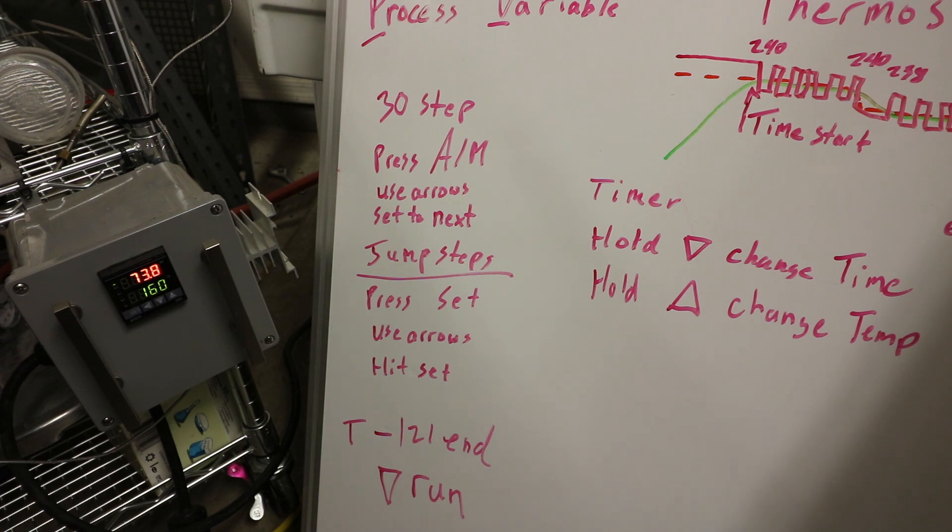In the past, by the time the last student went, it would be gelling up. So with this, it kind of keeps the pressure cooker like an oven, keeps it nice and warm at 150 degrees. And then the first and the last student are all pouring at the same temperature so they get the same experience.